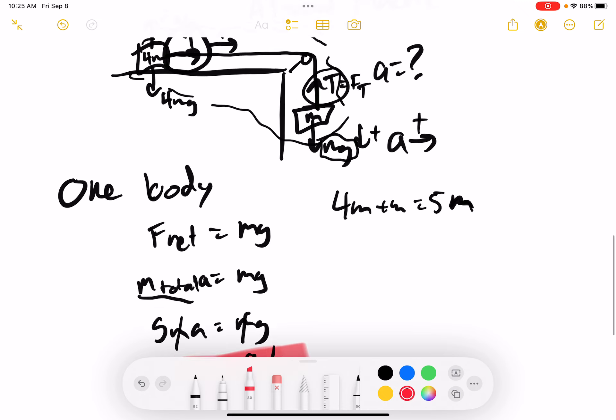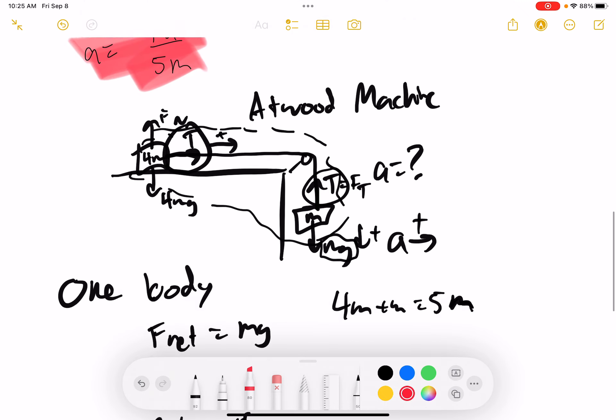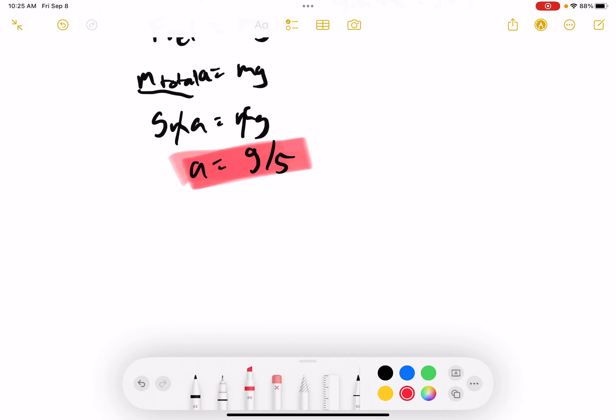One body is usually a little bit easier to set up, but let's go ahead and look at what it would look for a two body.